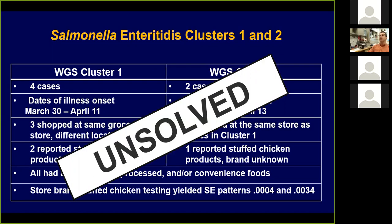Another thing to mention: sometimes with these clusters, if you get two cases that have exactly the same whole genome sequence, what you might find is simply a common travel history. Two people both traveled to the same country, village, and stayed at the same resort. So you will start to find travel-associated outbreaks, but because of the jurisdiction of the country where the source is, there may be no chance to actually investigate it.